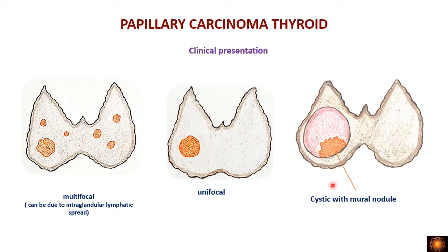At the time of presentation, the tumor may already appear as multifocal due to spread through intraglandular lymphatics. Sometimes it presents as a mural nodule in a colloid cyst, where there is a large cystic space with a small mural nodule representing the tumor. So presentation can be unifocal, multifocal, or cystic with a mural nodule.